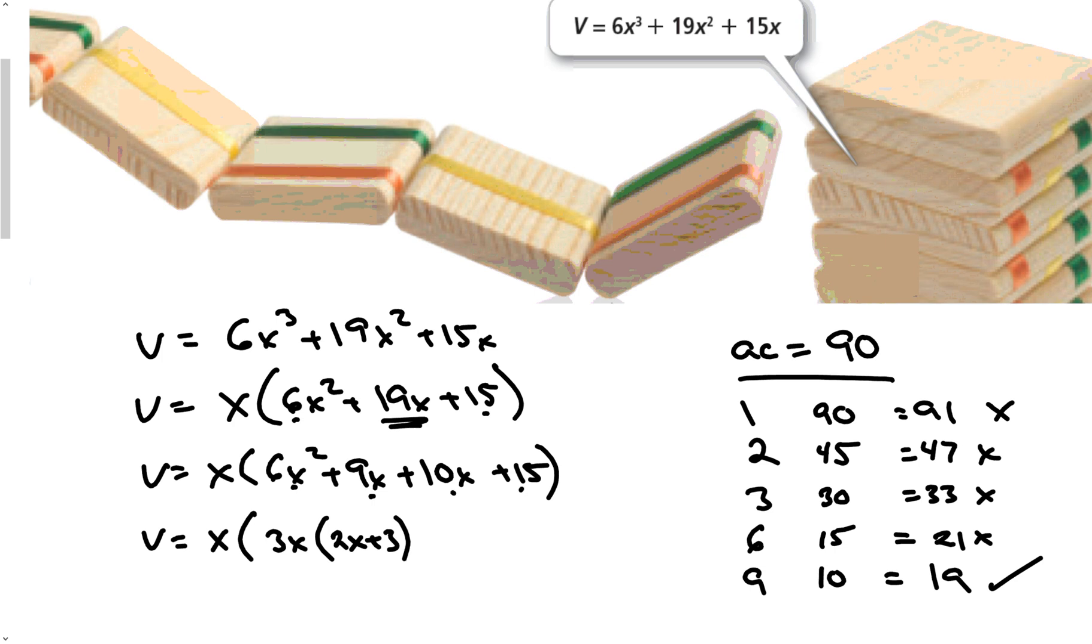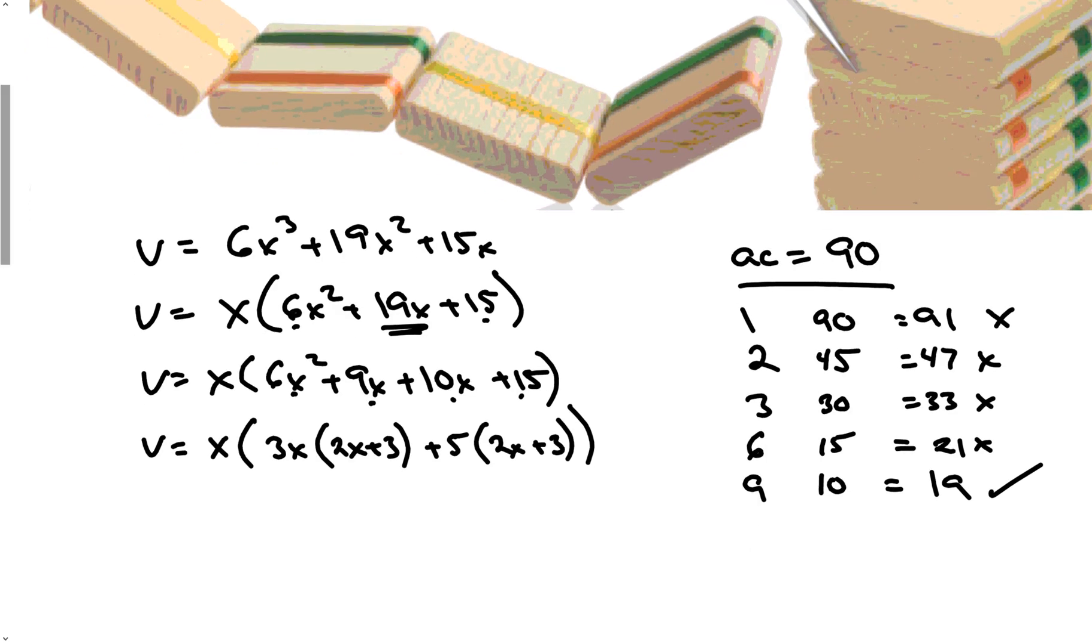Common factor between 10x and 15 is 5. What's left over? 2x plus 3. If these two were not the same we did something wrong.